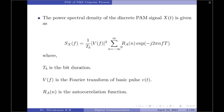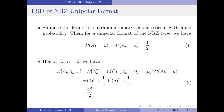The autocorrelation function is given by: Ra(n) = E[ak · a(k−n)]. When n = 0, this becomes E[ak²]. Substituting the probabilities: E[ak²] = 0² × (1/2) + A² × (1/2) = A²/2. So the autocorrelation function when n = 0 is A²/2.